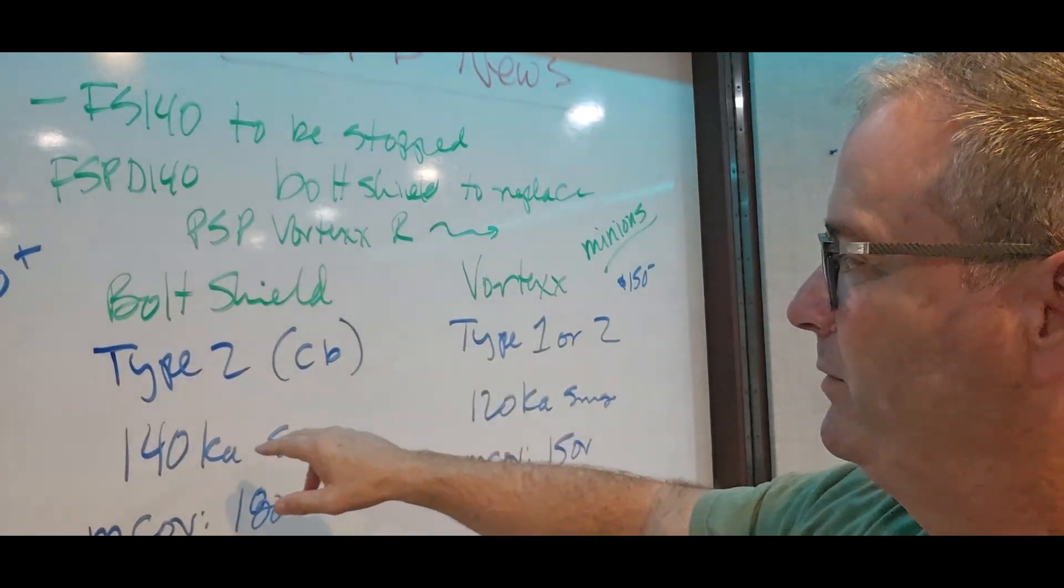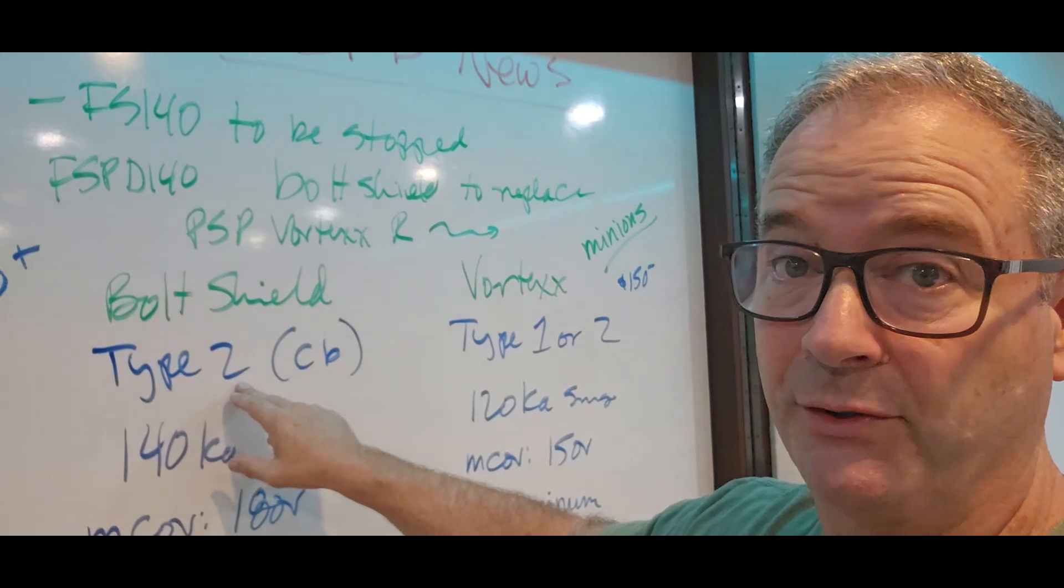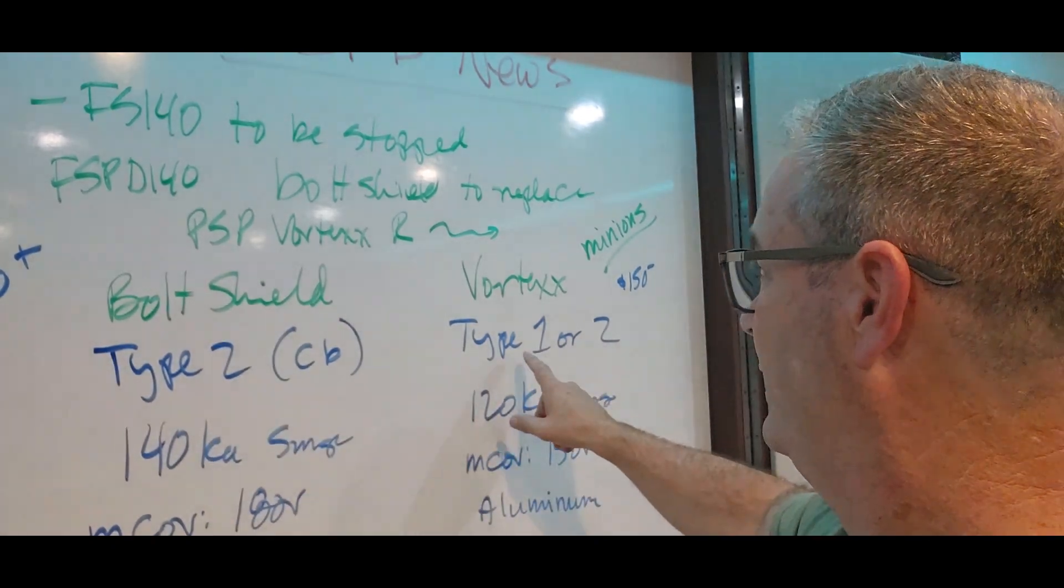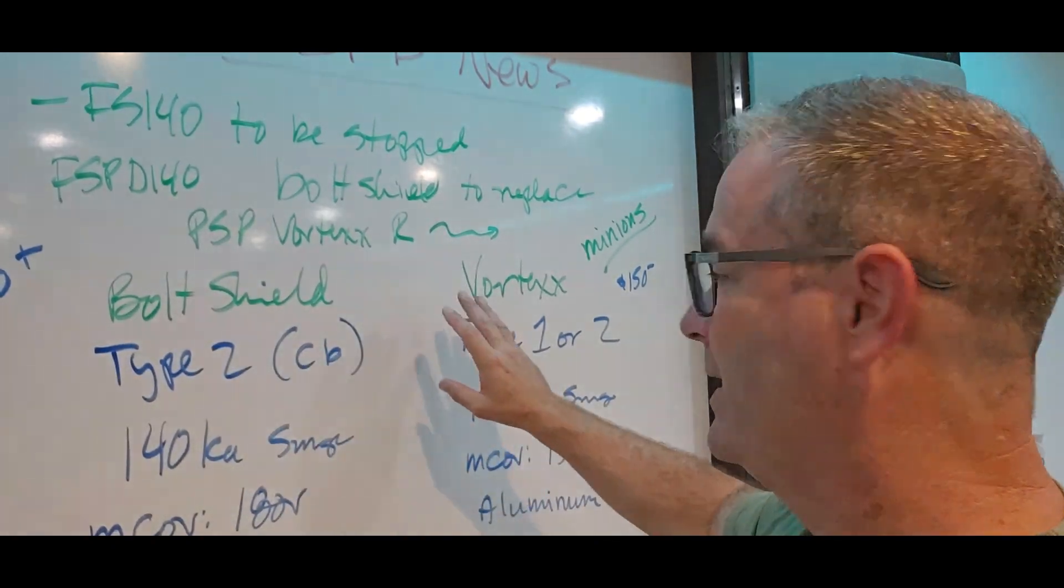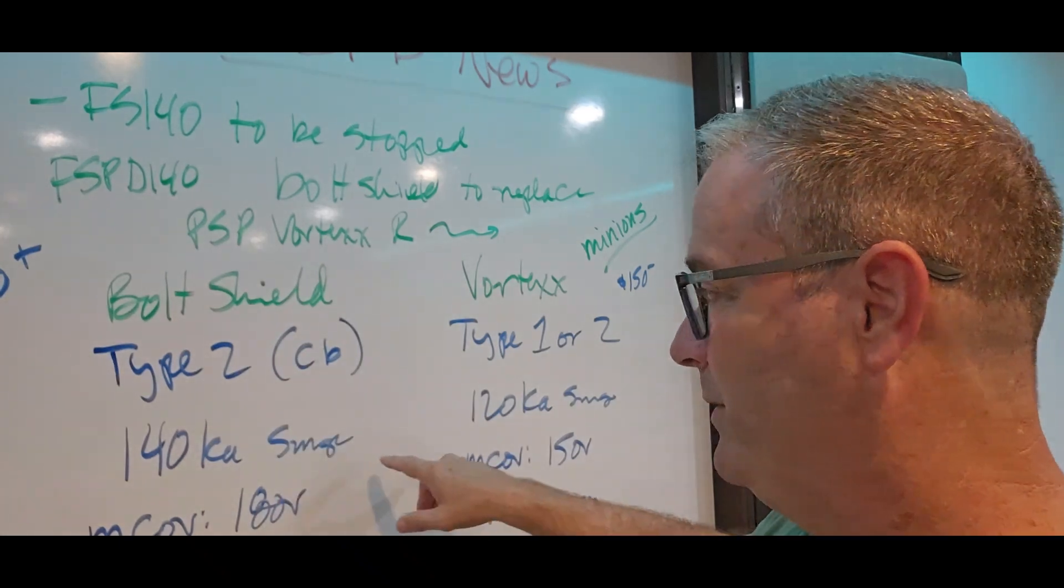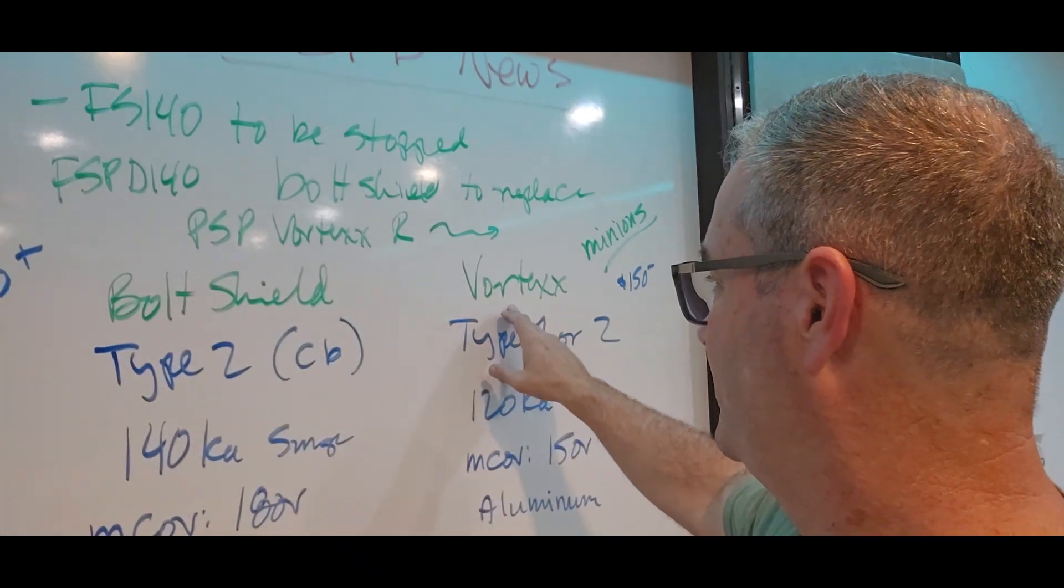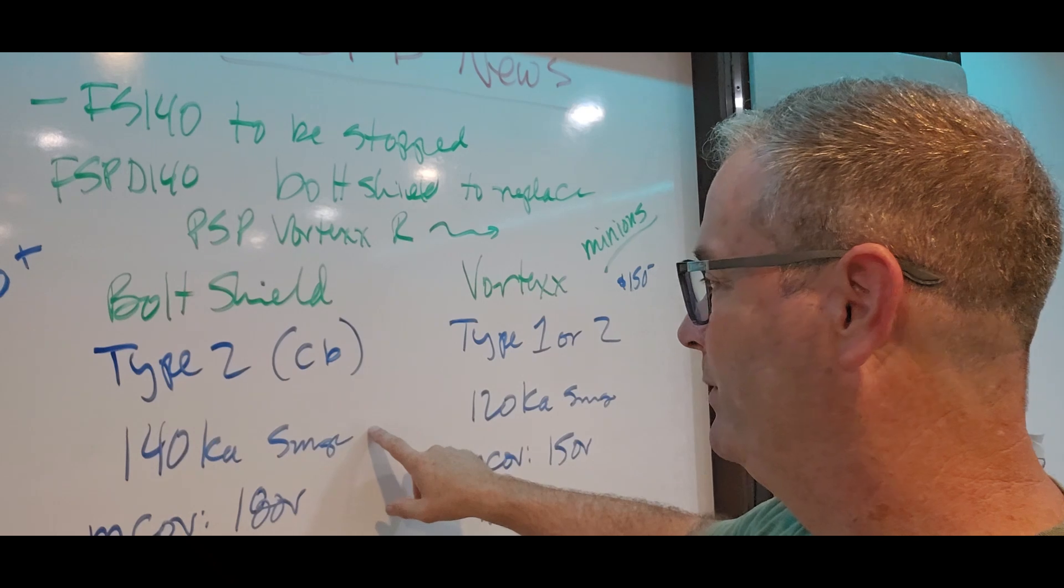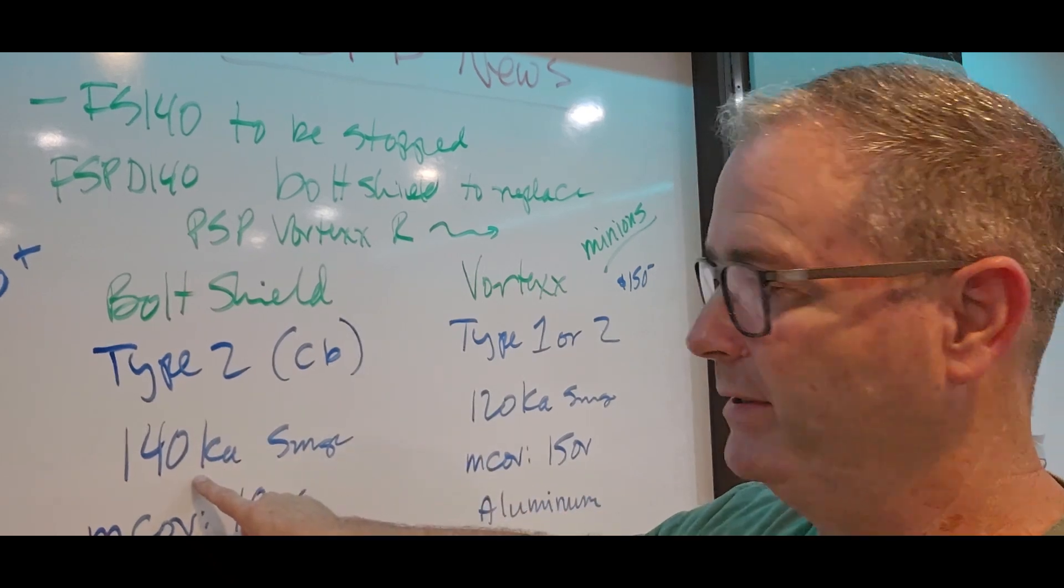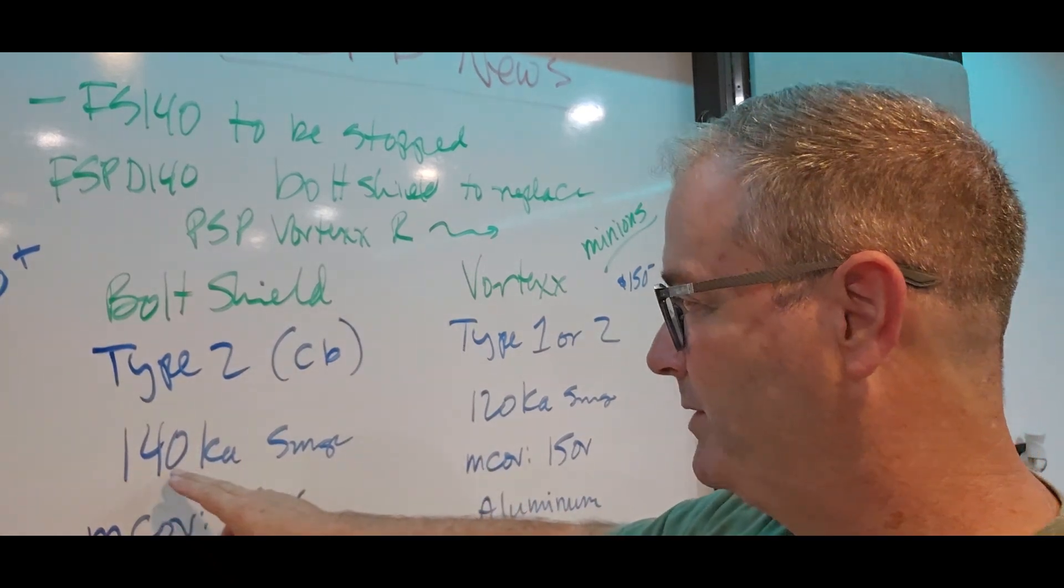Bolt Shield has to be a Type 2. You have to have a circuit breaker. The Vortex could be Type 1 or 2. The only place where the Vortex doesn't really keep up with the Bolt Shield is in the overall surge protection. So the Bolt Shield, the Siemens, is 140,000 versus 120,000.